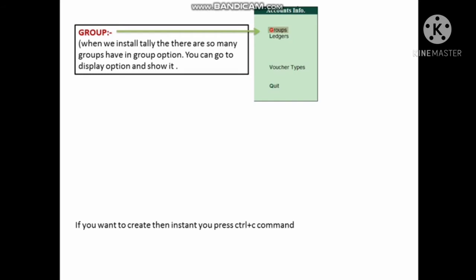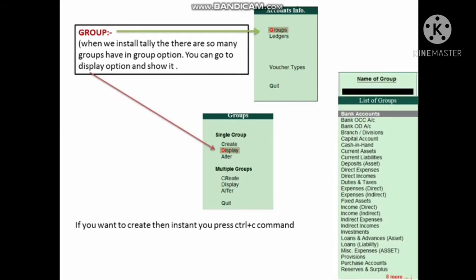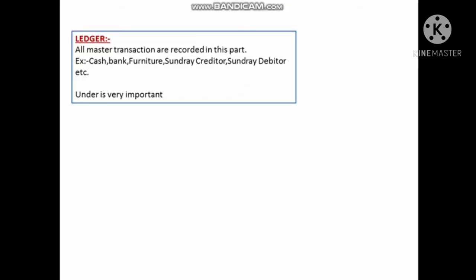Accounting Information has two sections: Groups and Ledger. Groups — when you install Tally software, many group options are already available. You can display the list of groups, and if you want to create one instantly, you press Ctrl+C.